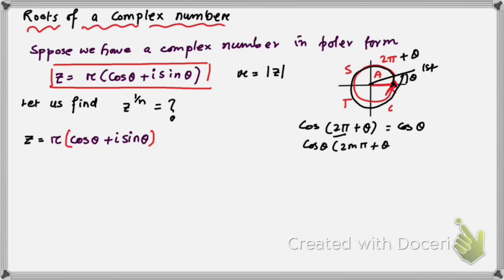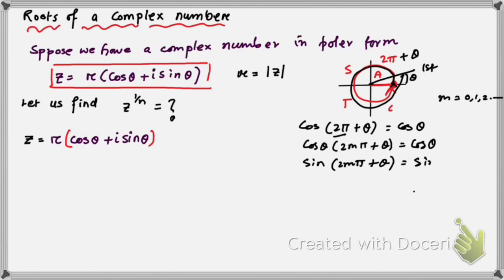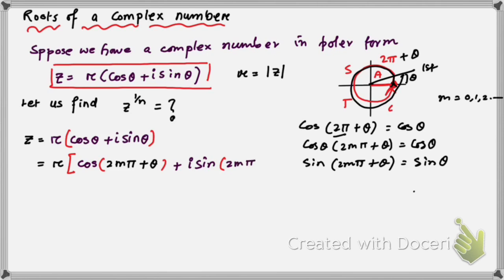Similarly, cos(2mπ + θ) = cos θ and sin(2mπ + θ) = sin θ, where m is a positive integer: m = 0, 1, 2, 3, and so on. These are standard results from trigonometry. So instead of cos θ we write cos(2mπ + θ) and instead of sin θ we write sin(2mπ + θ).